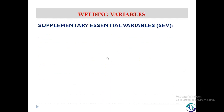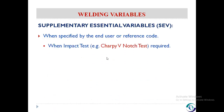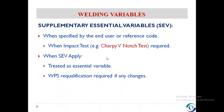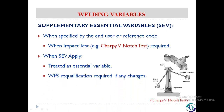Supplementary essential variables apply when specified by the end user or reference code. For example, when the test coupon receives an impact test, supplementary essential variables are applied, and they are then treated as essential variables — meaning if there is any change in them, WPS requalification is required. This is an example of the Charpy V-notch test equipment and a test coupon for the Charpy V-notch test.